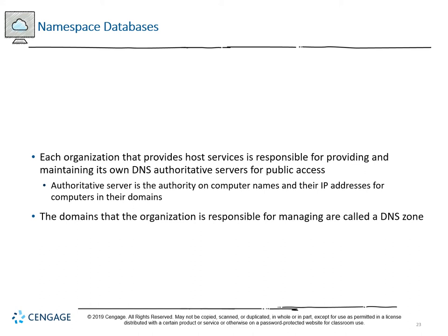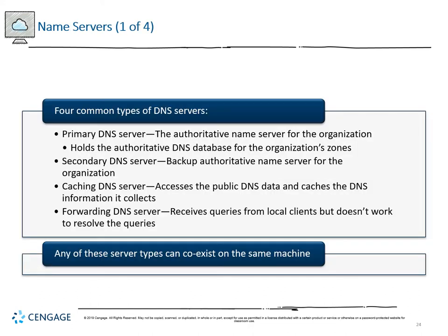A DNS zone's authoritative server is the directly assigned authority for computer names and IPs within that domain. Non-authoritative servers access public DNS and cache that information. The four server types are: primary (handles the authoritative database), secondary (backup), caching (temporarily holds DNS information for faster access, reducing load on the primary), and forwarding (receives queries but passes them to one of the other three without resolving them). Any of these types can coexist on the same machine.